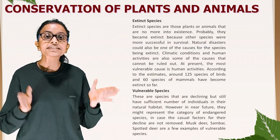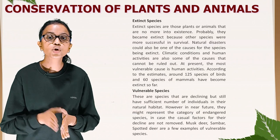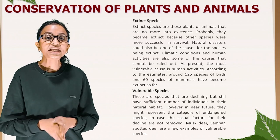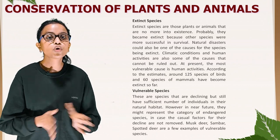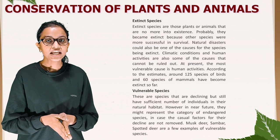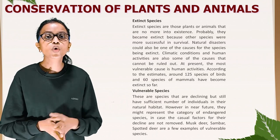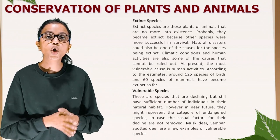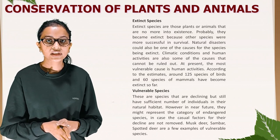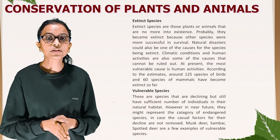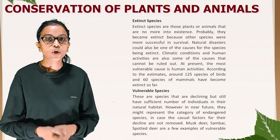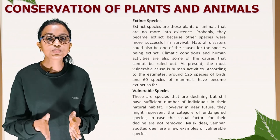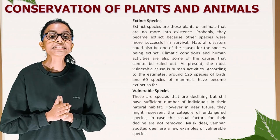Extinct species are those plants or animals that are no more in existence. They probably became extinct because other species were more successful in survival. Natural disasters could also be one of the causes. Climatic conditions and human activities are also causes that cannot be ruled out — at present the most vulnerable cause is human activities. According to estimates, around 125 species of birds and 60 species of mammals have become extinct so far.